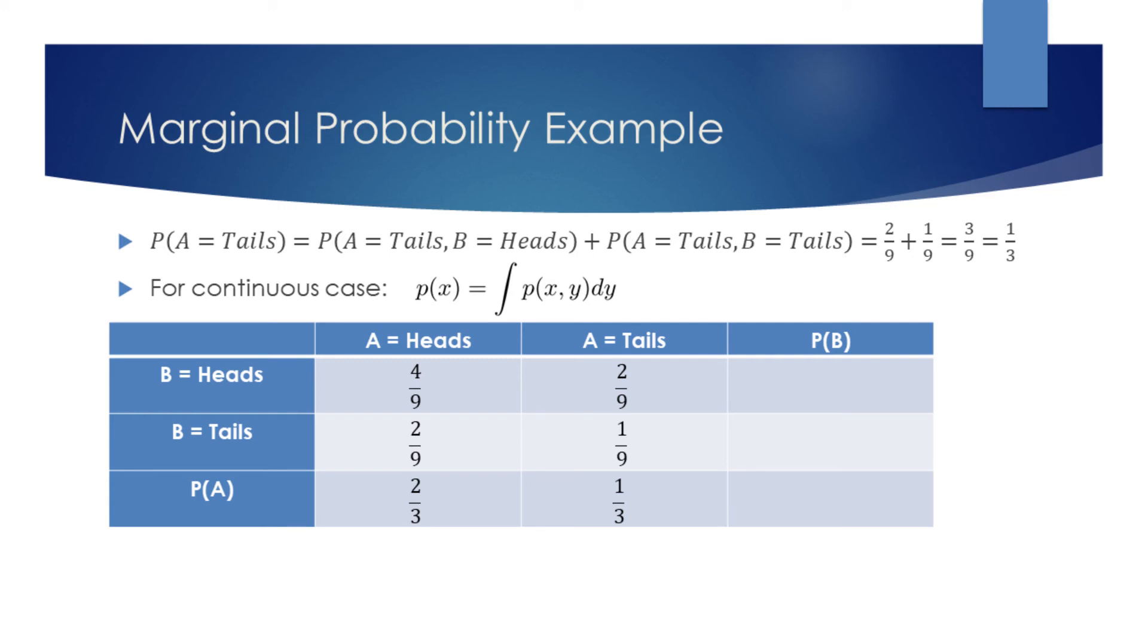We should now be familiar with finding the marginal probabilities. Finding the probabilities for the coin B to display either heads or tails is left as an exercise for the viewer.